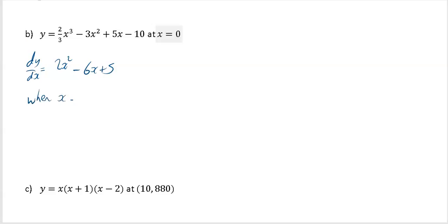So just say when x equals 0, dy by dx is equal to 2 times 0 squared minus 6 times 0 plus 5. And if you just think about it here, if you had 2 times 0, 0 squared is going to be 0.